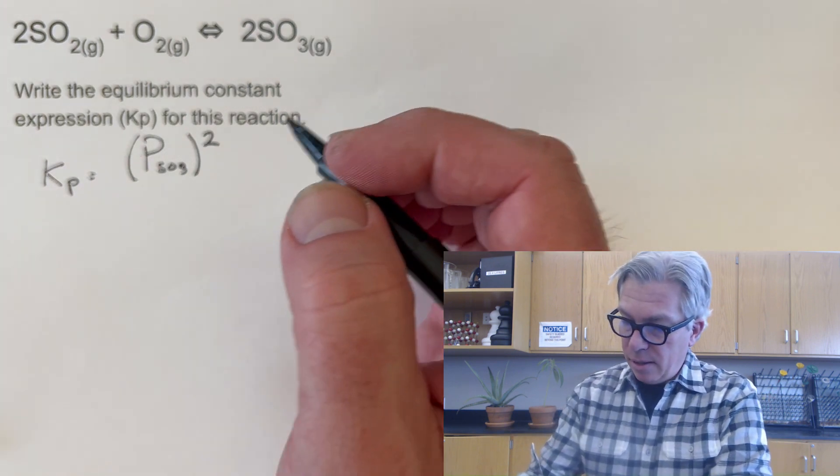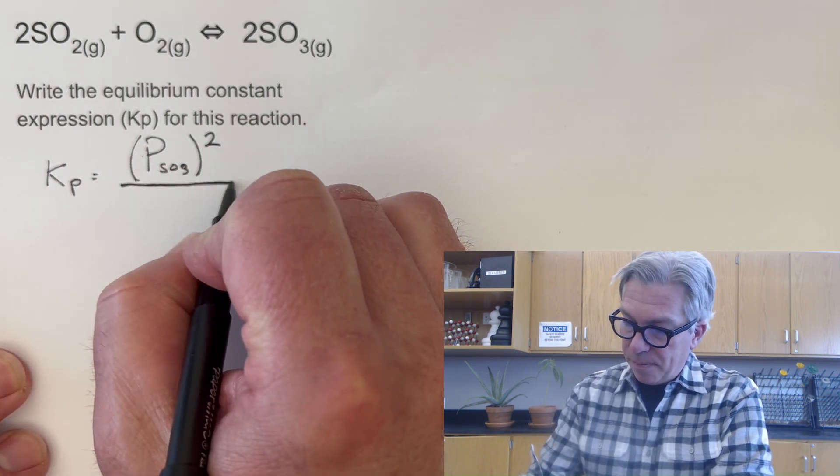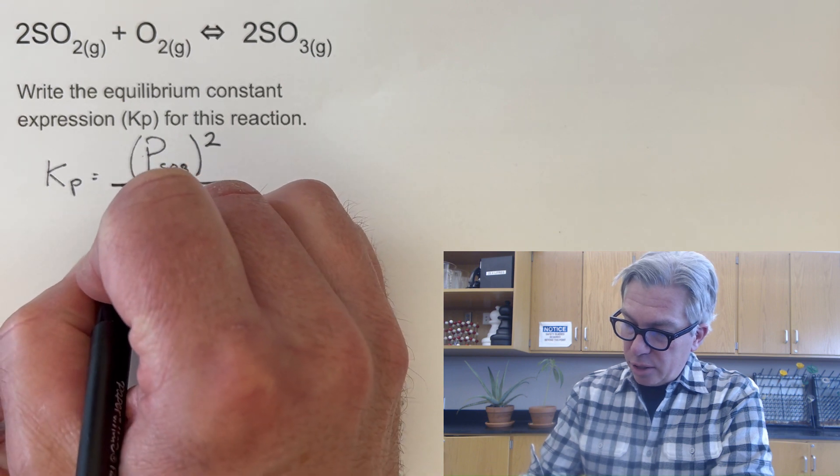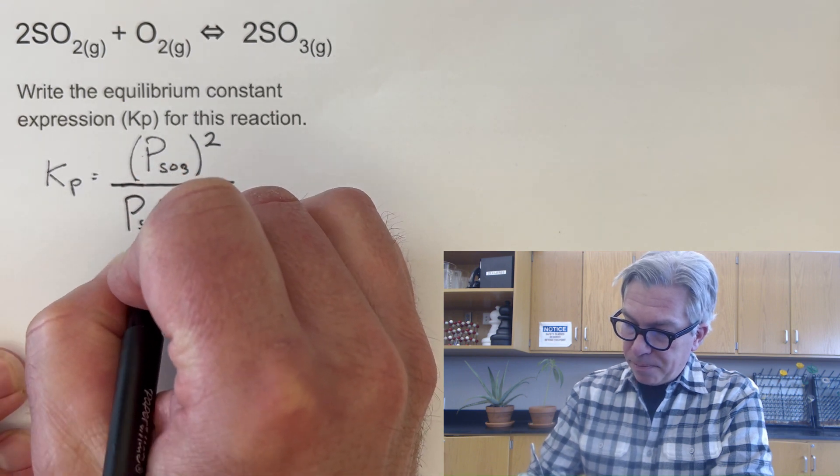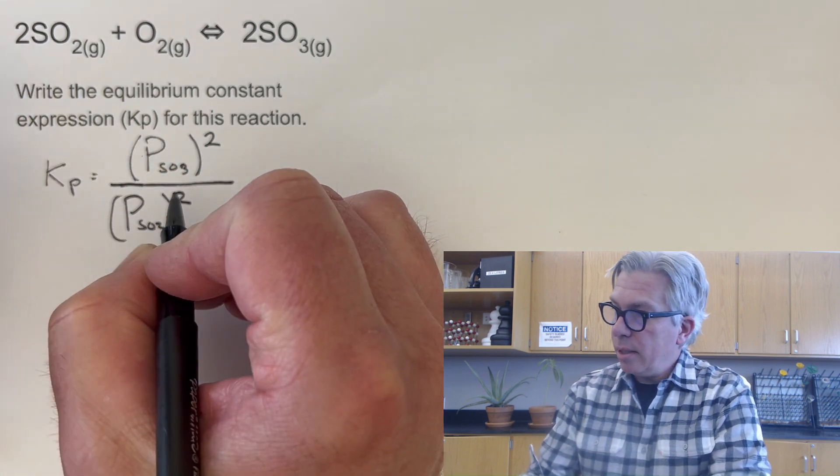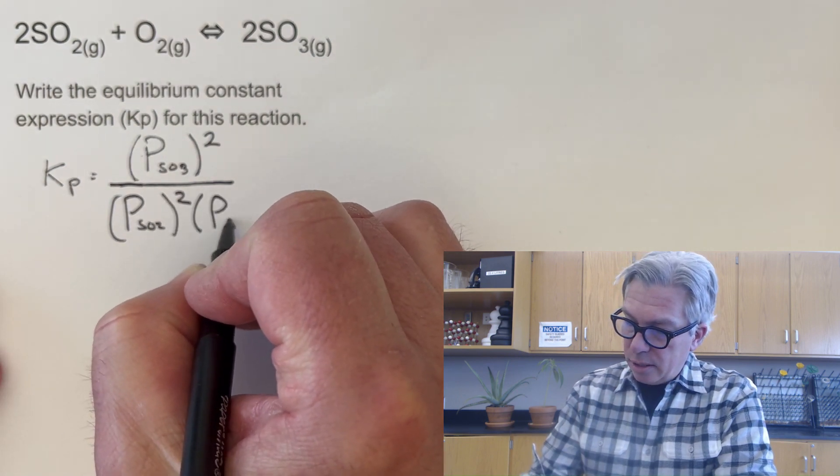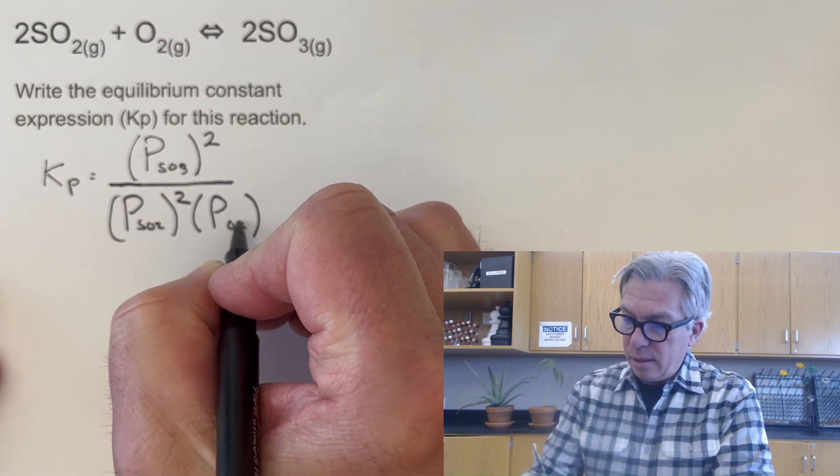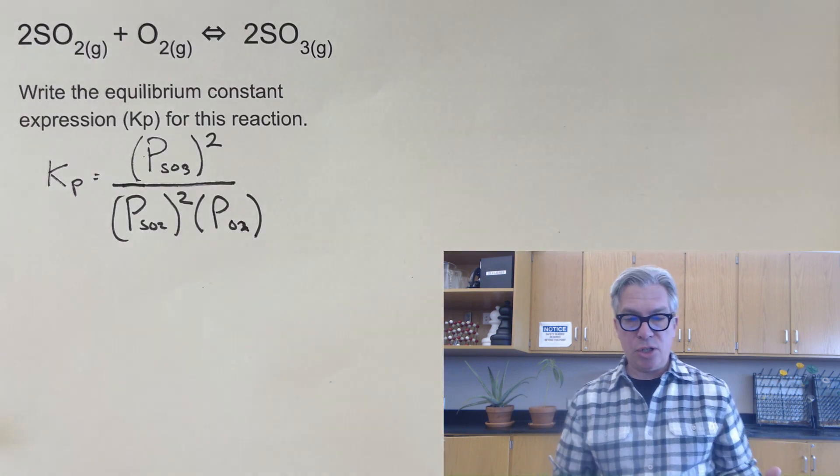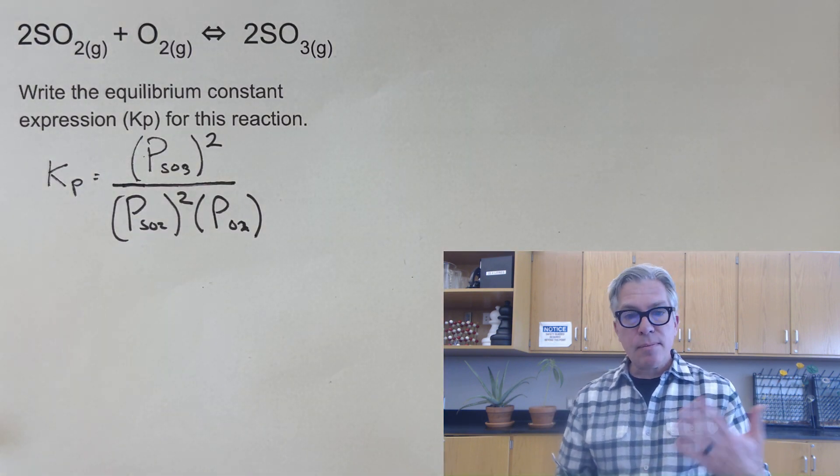So keep that consistent with the Kc expressions. And then we'll do the pressure of SO2 on the bottom, also squared, and the pressure of O2. This is by convention how we write the equilibrium constant expression Kp.